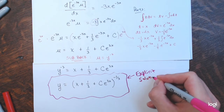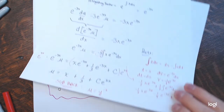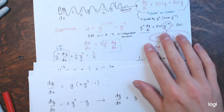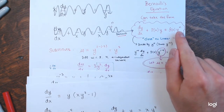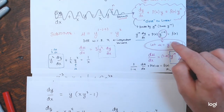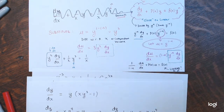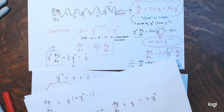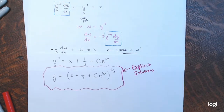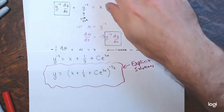To summarize the procedure for Bernoulli equations: recognize the Bernoulli form, divide by y to the nth, substitute u = y^(1−n) and substitute also for du/dx, then solve the resulting linear equation using an integrating factor, and finally substitute back and solve for the dependent variable y.